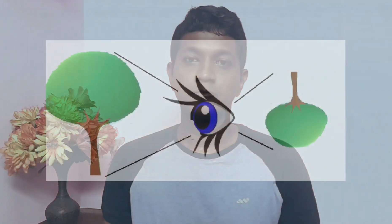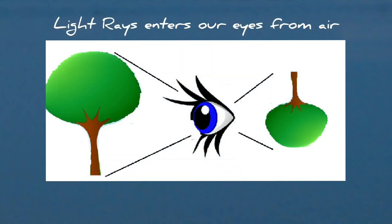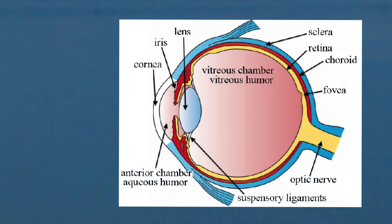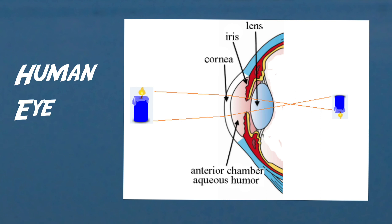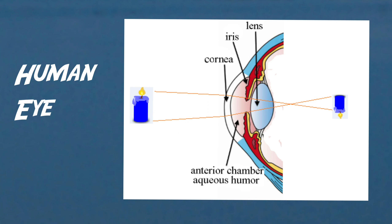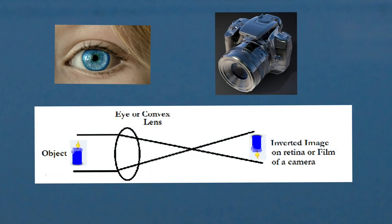Similarly in our eyes, the same thing happens. Light rays enter from air into our eye, and this causes refraction. The major part of the refraction occurs in the cornea of the eye. Then the light is again refracted in the lens. As a result, the image gets inverted. Cameras with convex lenses also invert images, again due to refraction.